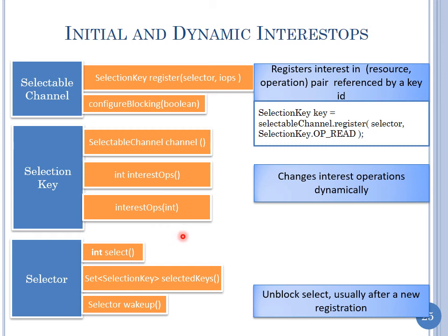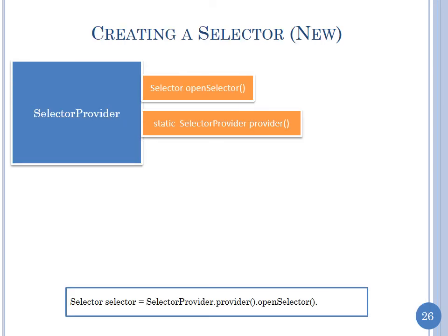Since you can change the interest ops dynamically, you might want select() to be reshuffled — some other thread can wake up the thread that called select(), which can then look at the new interest ops and block based on those. That's how to use the NIO layer — you can see it's getting complicated and you might need a higher-level layer. To create a selector: take a SelectionProvider class, invoke the static method provider(), and on that call openSelector(). Each time you do this you get a new selector object.